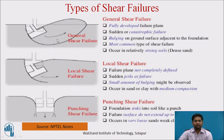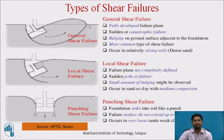These are the corresponding figures related to general shear failure, local shear, and punching shear failure. For general shear failure, this entire curvilinear upward line is nothing but the bulging line. From the footing to ground level, the line is nothing but the failure or slippage line.